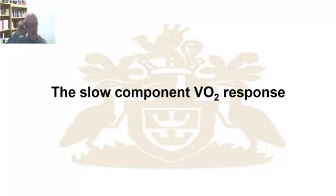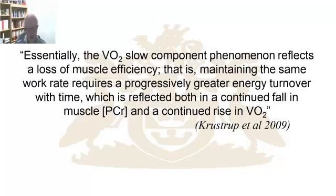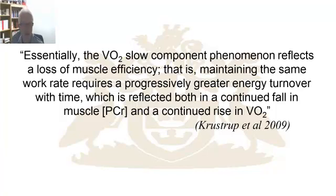So why is the VO2 slow component happening, and why do we need to understand it, and why is it important to you as an exercise scientist and as an exercise physiologist? This is from Peter Krosstra, and this really summarizes everything you need to know. Essentially, the VO2 slow component phenomena reflects a loss of muscle efficiency. Maintaining the same work rate requires a progressively greater energy turnover with time, which is reflected both in a continued fall in muscle PCR and a continued rise in VO2. In other words, we know what the expected demand would be at the muscle for that intensity once we are above gas exchange thresholds, but what we seem to find is that the muscle efficiency starts to diminish.